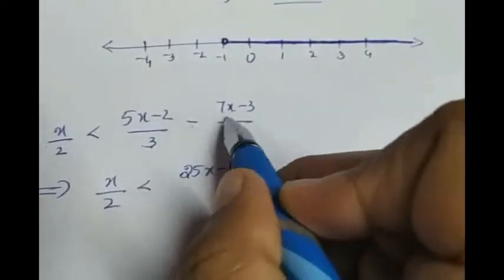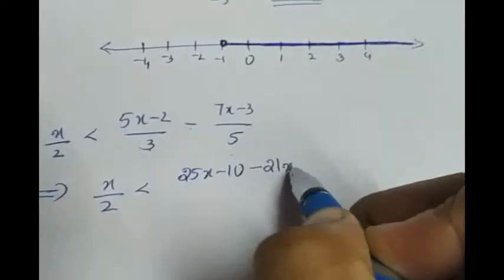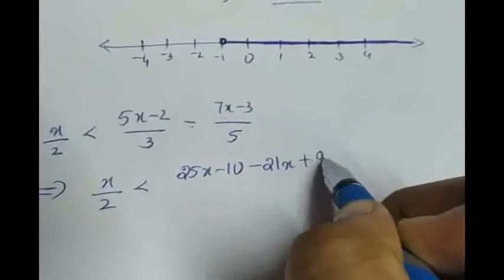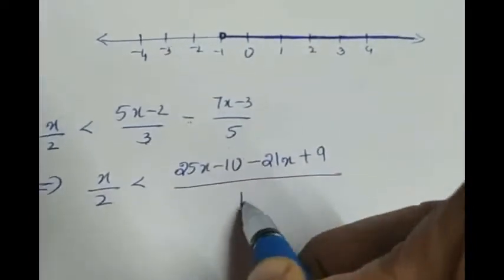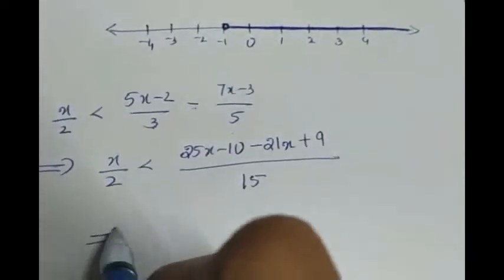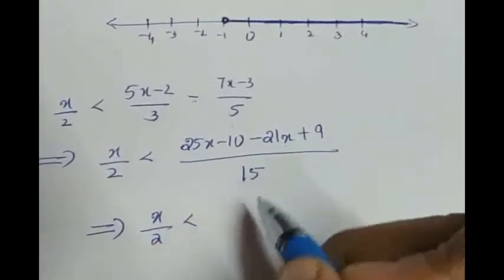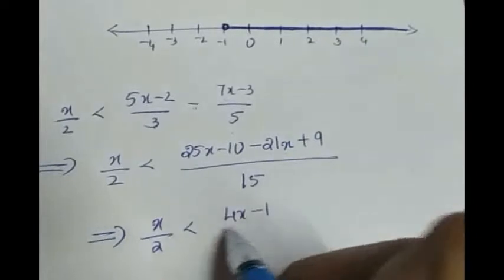So minus 3 into 7x gives you minus 21x. Negative is there, 3 is there, into minus 3 gives you plus 9, divided by 5 into 3 gives you 15. Which implies x by 2 less than 25x minus 21x is 4x minus 1 by 15.